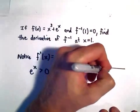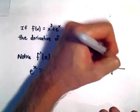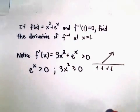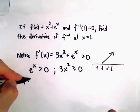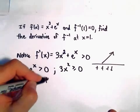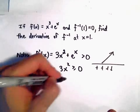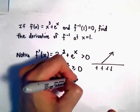And that tells us, since our derivative is always positive, it tells us our function is strictly increasing, which means it passes the horizontal line test. And that tells us that the function f does have an inverse.